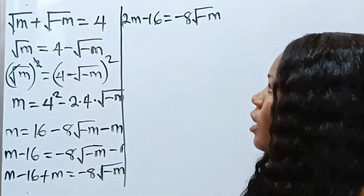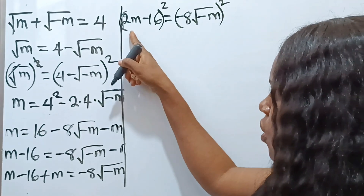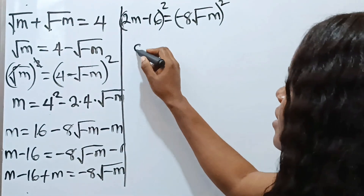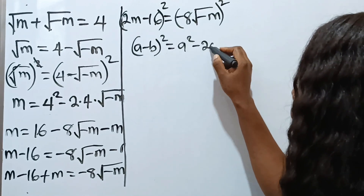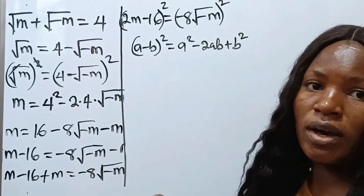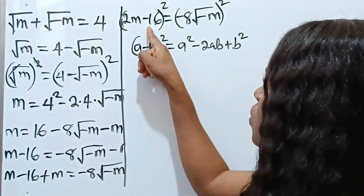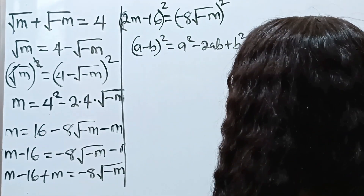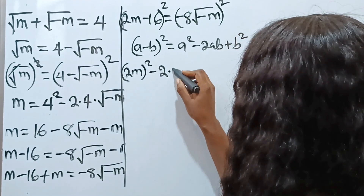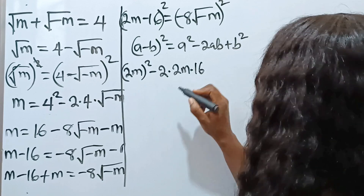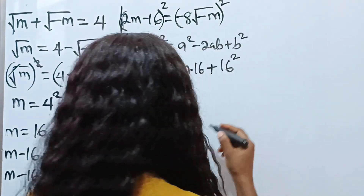We square both sides. We've already seen the identity a minus b squared equals a squared minus 2ab plus b squared. In this case a is 2m and b is 16. So the left side becomes 2m squared, minus 2 times 2m times 16, plus 16 squared. The right side is negative eight squared times negative m.